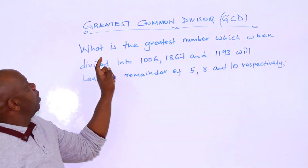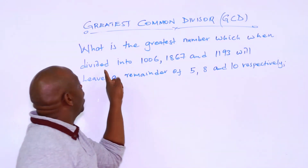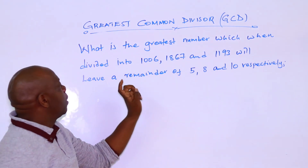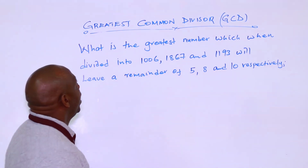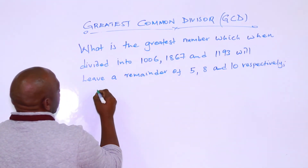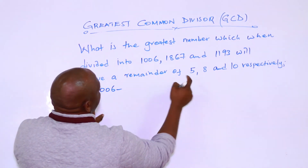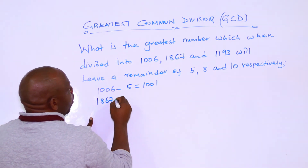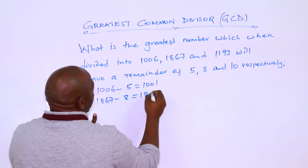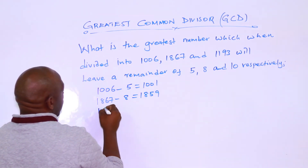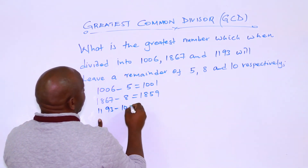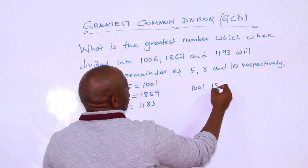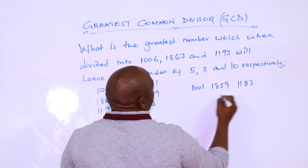Our last question is: what is the greatest number which, when divided into 1006, 1867, and 1793, gives a remainder of 5, 8, and 10 respectively? In this one, you start by subtracting the remainders: 1006 minus 5 gives 1001, 1867 minus 8 gives 1859, and 1793 minus 10 gives 1783.